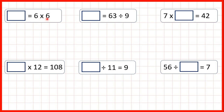So 6 times 6 is 36. Here again we only have an answer box on this side of the equal sign, so we just do the calculation. 63 divided by 9 is 7 because 7 times 9 is 63.